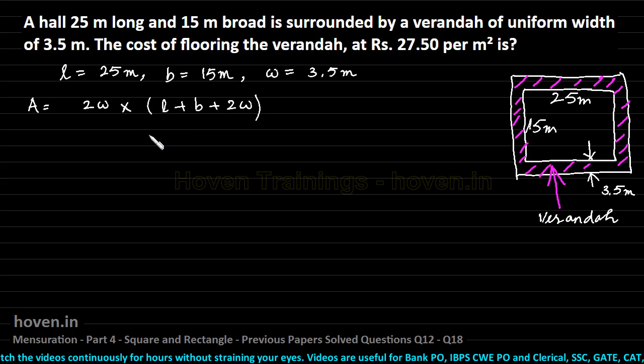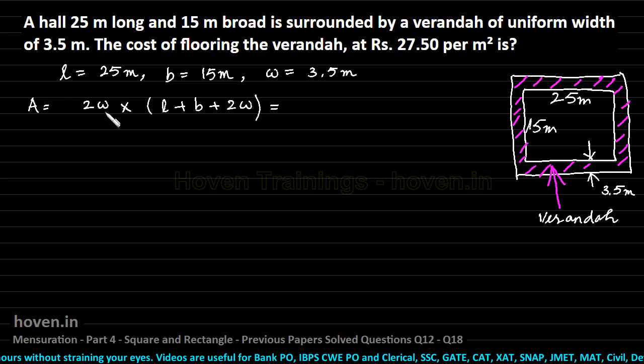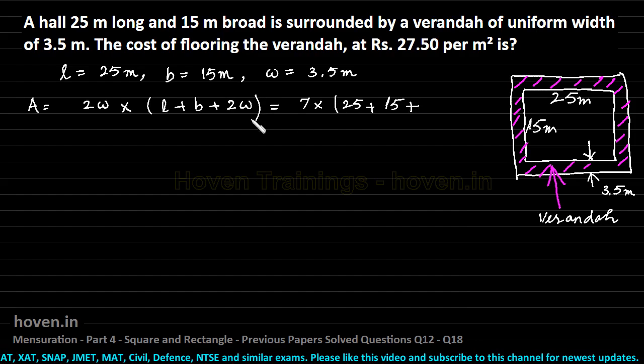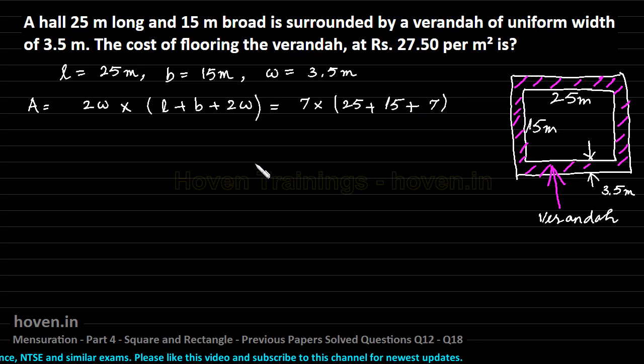Now, we can make the substitutions to find out the area. This will be equal to 2w, this is 3.5, so it becomes 2 into 3.5 that is 7. We can even write orally. 7 multiplied by length is 25, add to it 15, and further add 2 times w which we have already seen is 7. So this is what is the area.